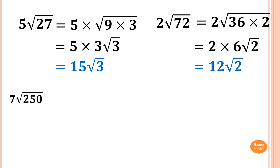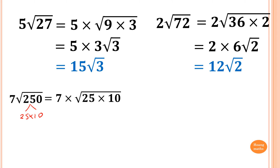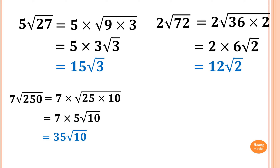Okay, this is how it works. Now look at this: 7√250. So 250 is 25 times 10 — simple one. So which is equal to 7 times √(25 × 10). Square root 25 is 5, so 7 times 5√10. And 7 times 5 is 35, so 35√10.